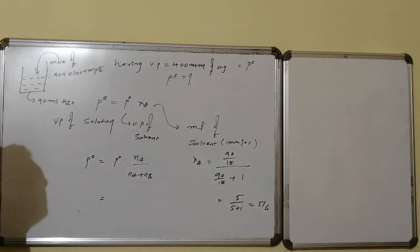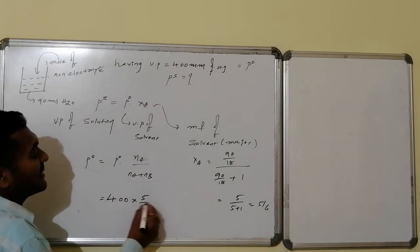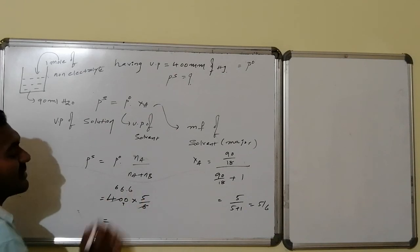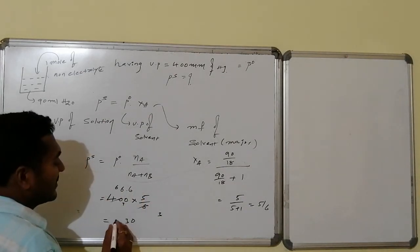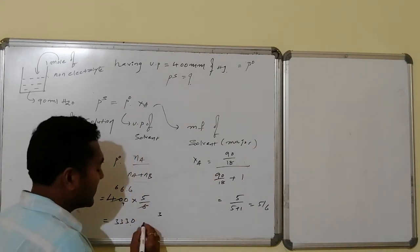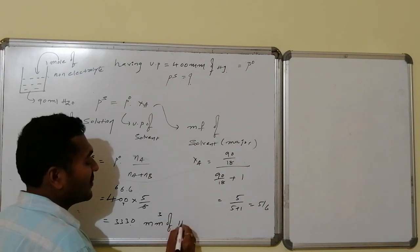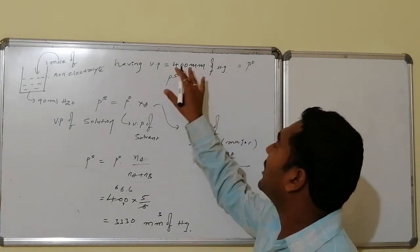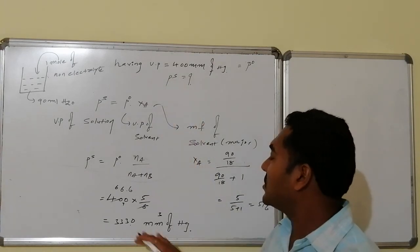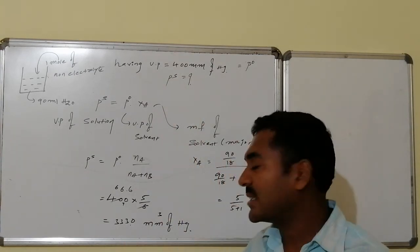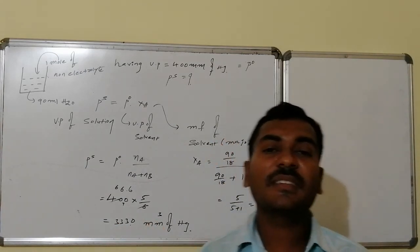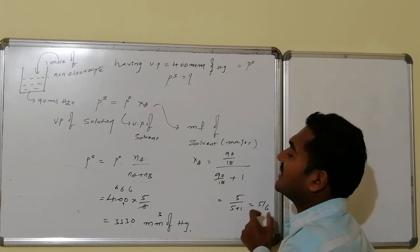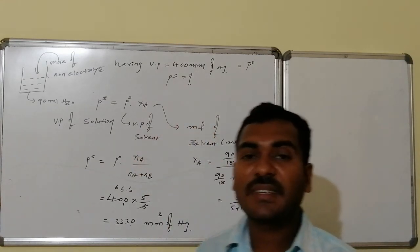Therefore Ps = P0 × XA = 400 × (5/6) = 333 mmHg. Water with 90 mL having initial vapor pressure of 400 mmHg, after adding 1 mole of non-electrolyte, the vapor pressure is reduced to 333 mmHg. The mole fraction of solvent is 5/6, so the solution has 5/6 times the vapor pressure of the pure solvent.